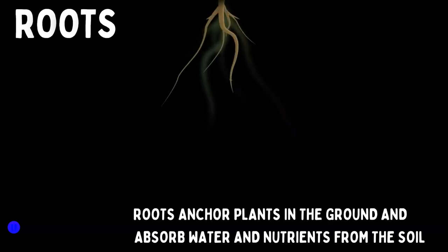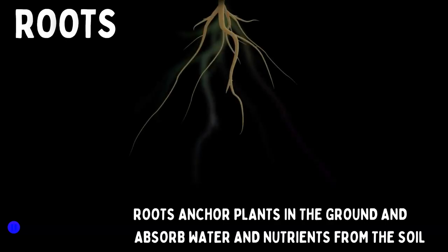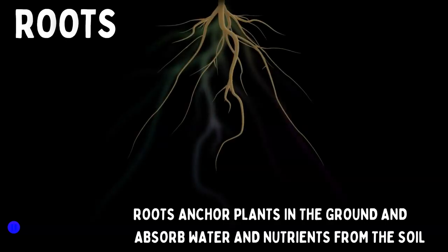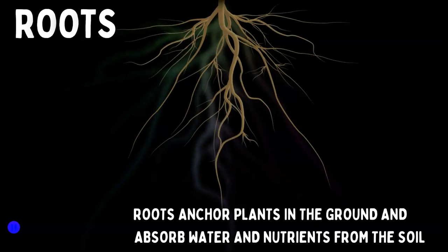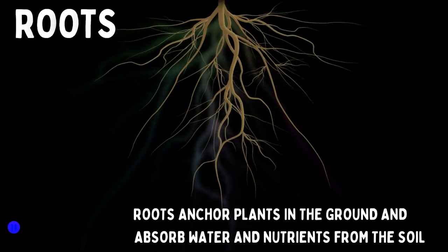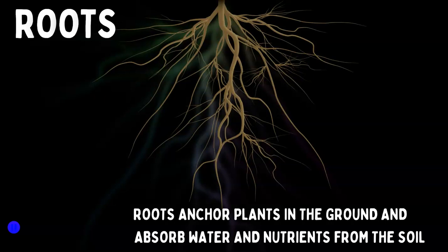Next, plants have roots — animals don't. They use these roots to anchor them into the ground, and they absorb water, kind of like straws, and nutrients from the soil.